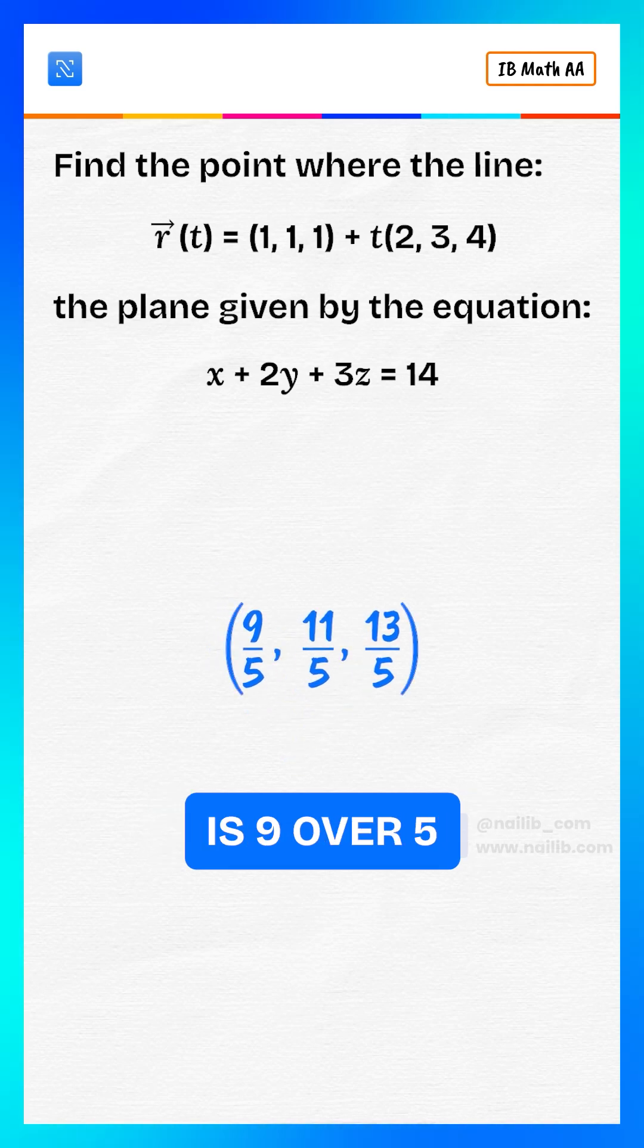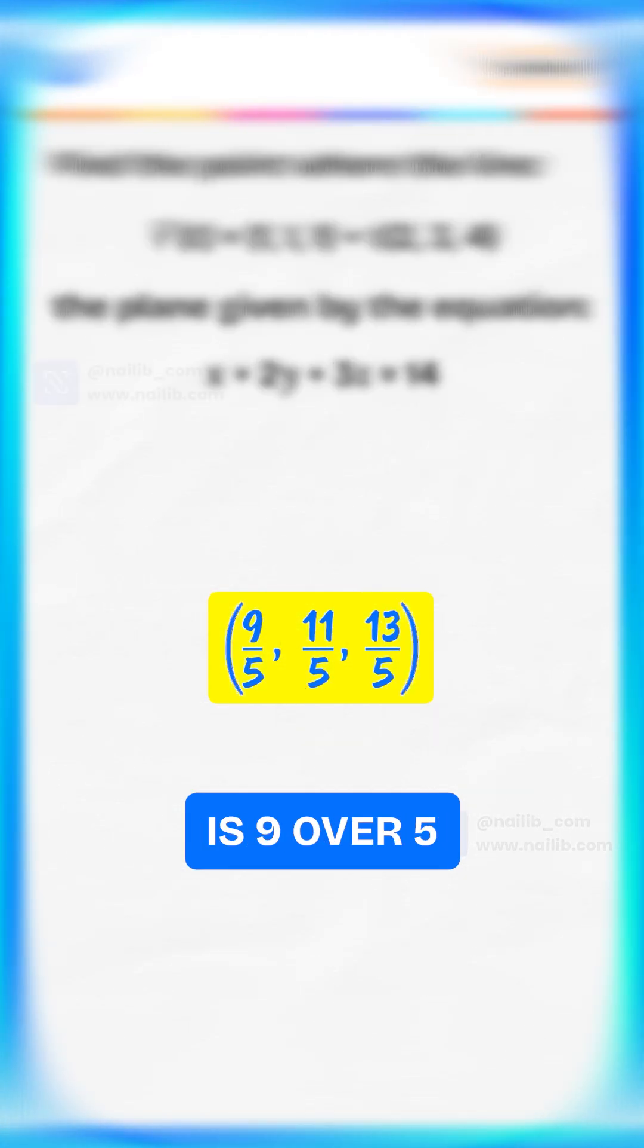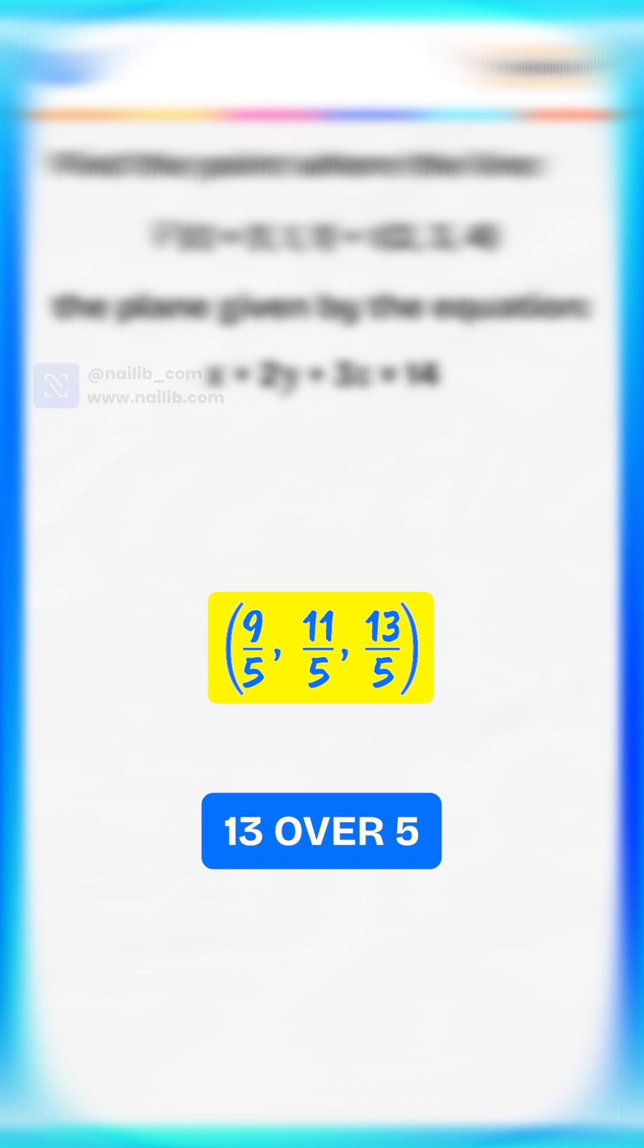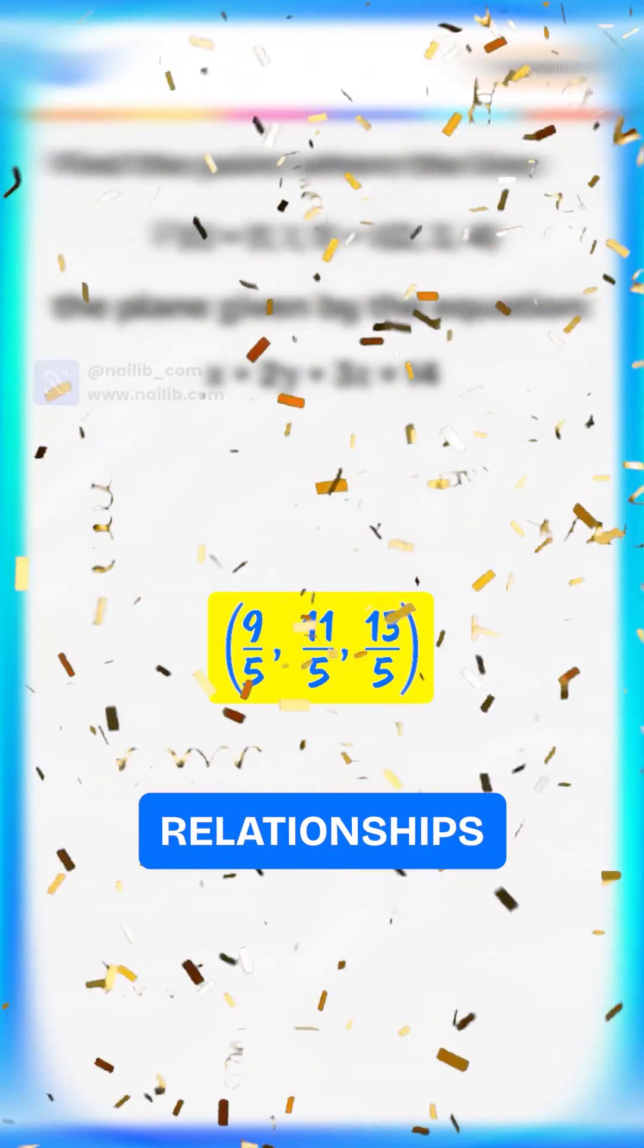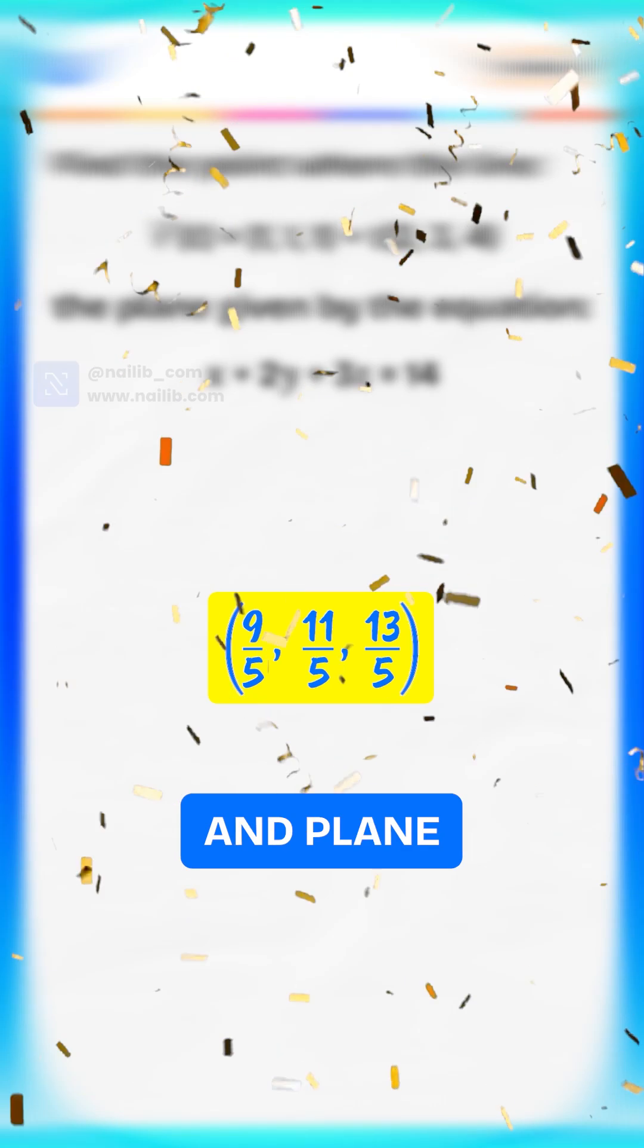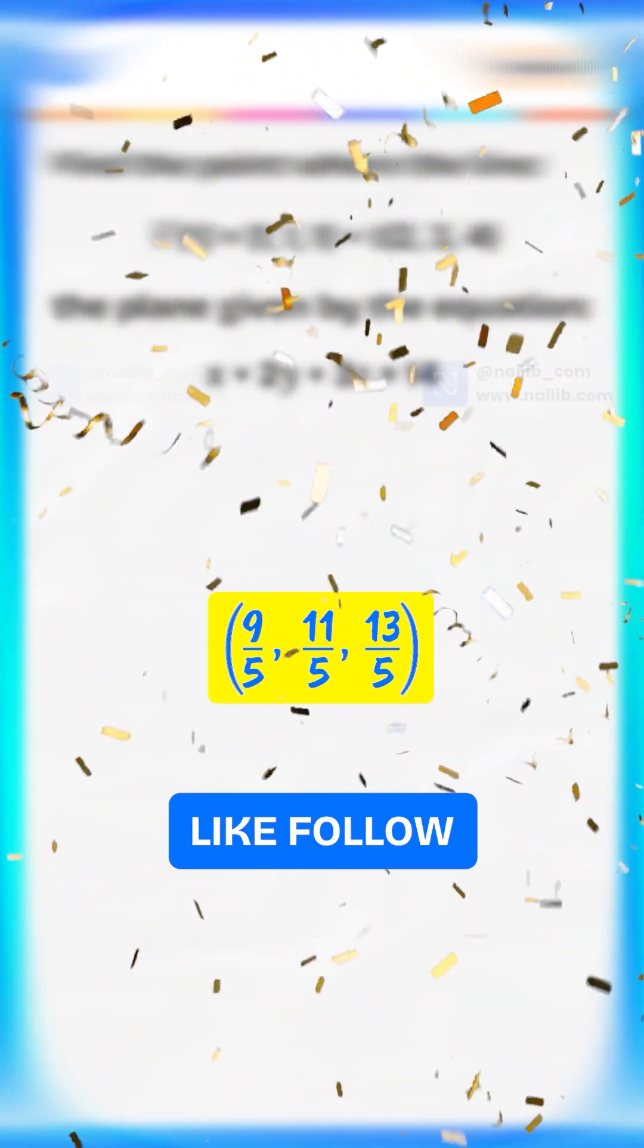The point of intersection is 9 over 5, 11 over 5, and 13 over 5. If only all relationships were as smooth as this line and plane. Like, follow, and I'll keep dropping math bombs like this.